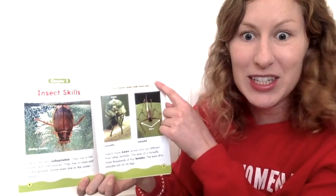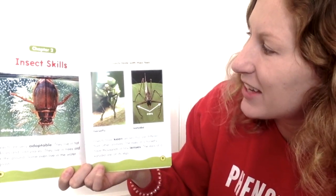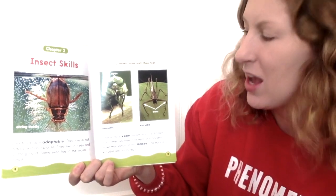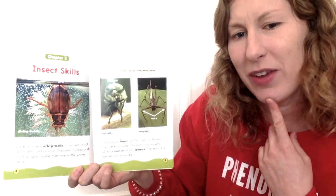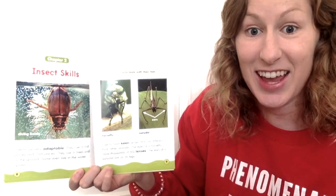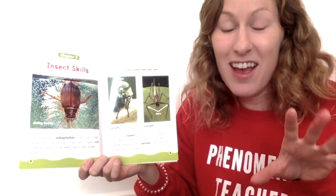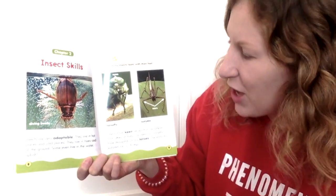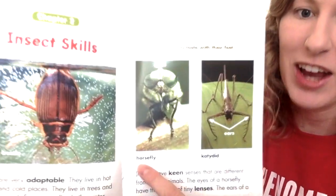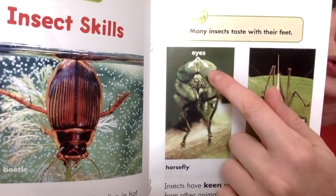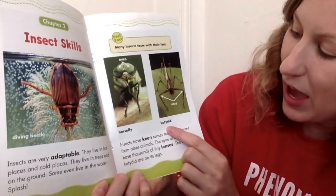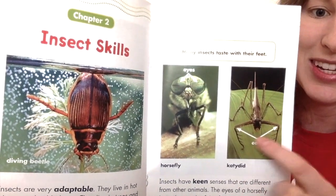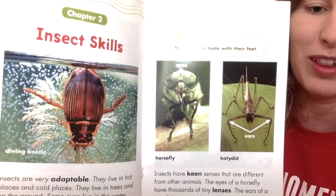On the next page we have a fast fact at the top. Let's read it. Many insects taste with their feet. If insects have six legs, that means they can taste with all six of their feet. Right here we have a horsefly, and our caption points to its two eyes. And right here we have a katydid — it points to its ears. Its ears look like they're on their elbows of the leg.